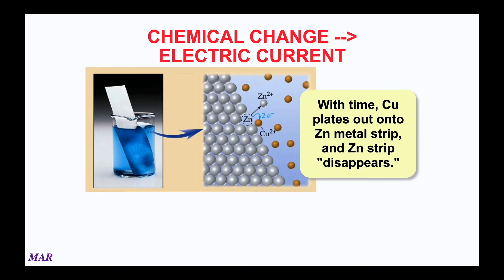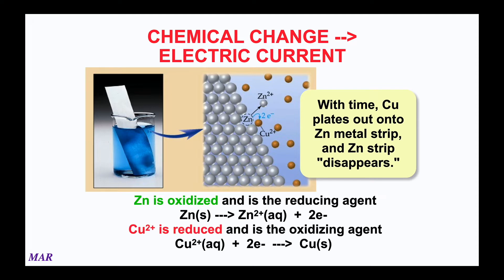You would, quote unquote, see the zinc disappearing — it's not really disappearing. The zinc is turning into zinc two plus and the copper two plus ions are turning into copper metal, but it would look like the zinc is disappearing. Zinc two plus is colorless, so you'd see the blue color go away. The zinc two plus ions are floating around — zinc is being oxidized, turned into zinc two plus. Remember that things that are oxidized are also called reducing agents. Copper two plus gaining the electrons is being reduced, and copper two plus is also known as the oxidizing agent.